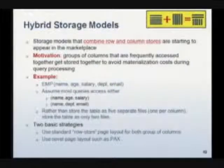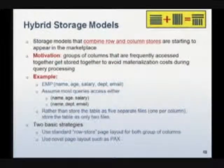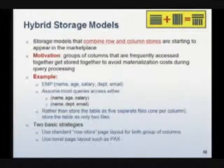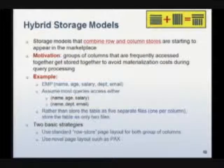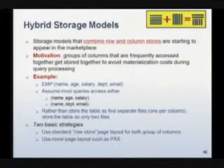It turns out if a lot of columns are accessed together, maybe you want a hybrid model. Maybe it doesn't have to be a pure row store — maybe it can be a hybrid model which combines the two. There are a lot of papers starting to appear, and some products are starting to appear, that adopt a hybrid strategy.